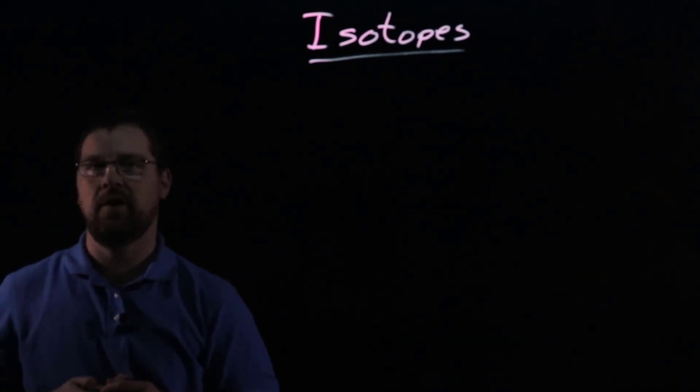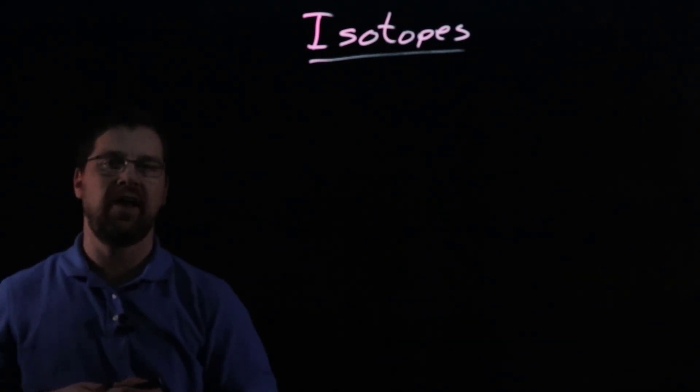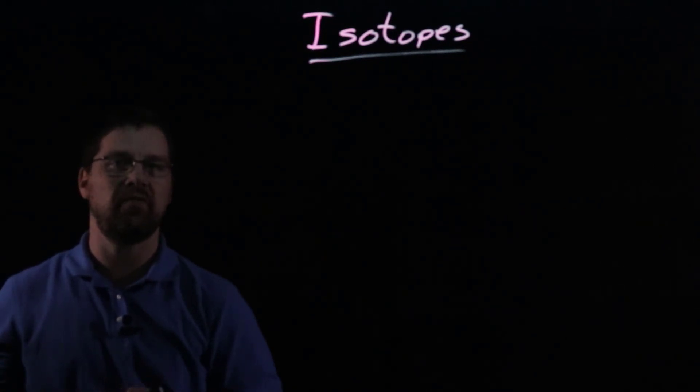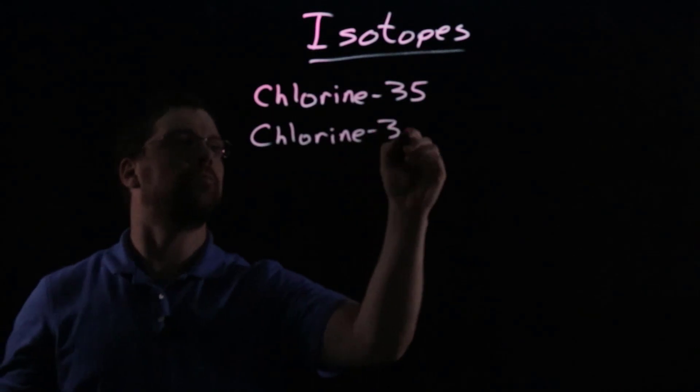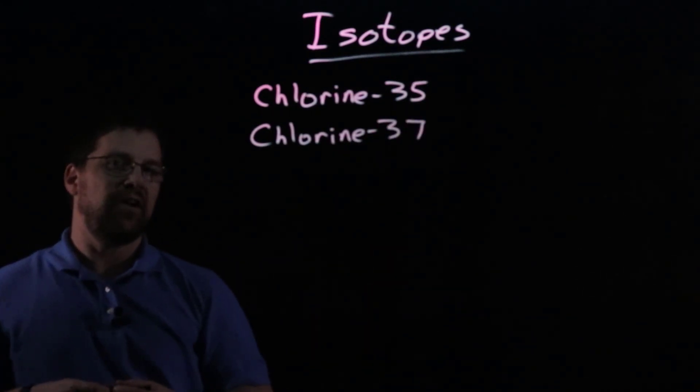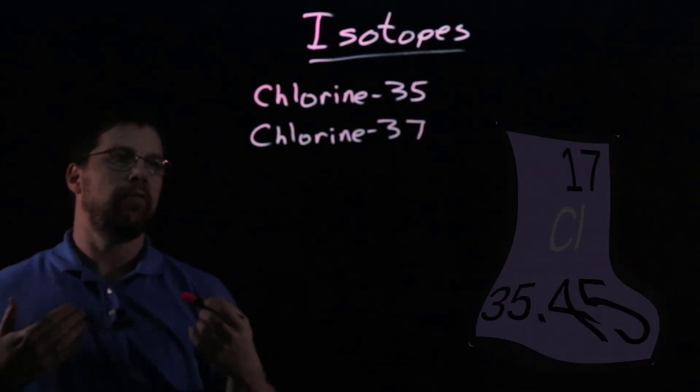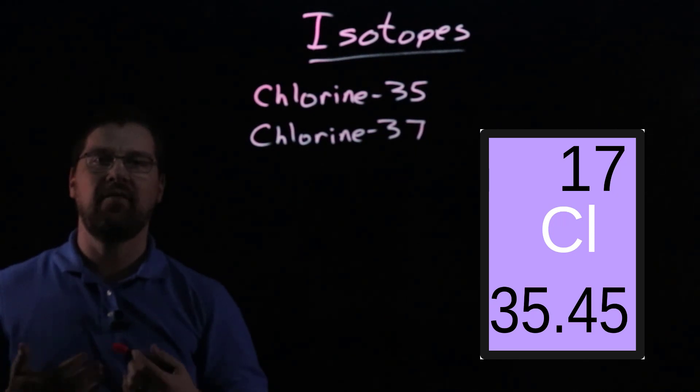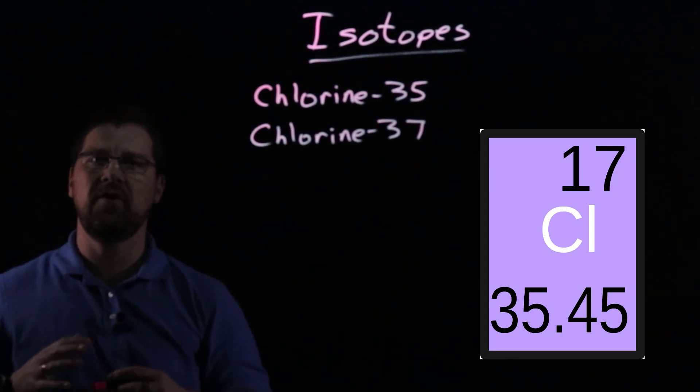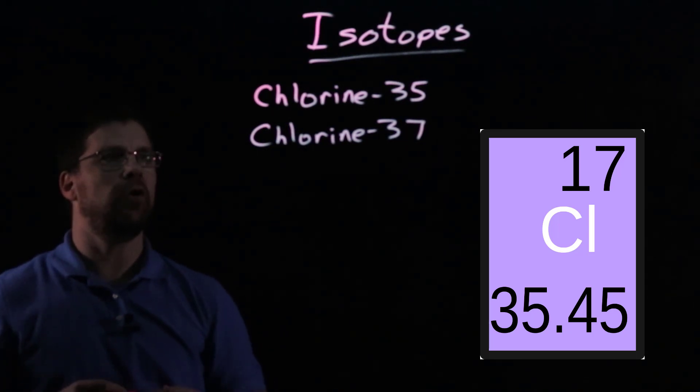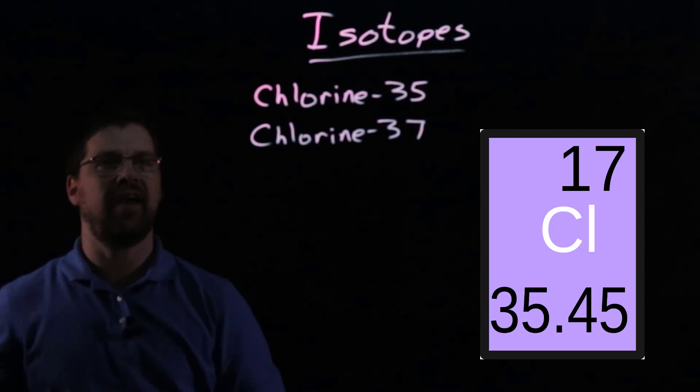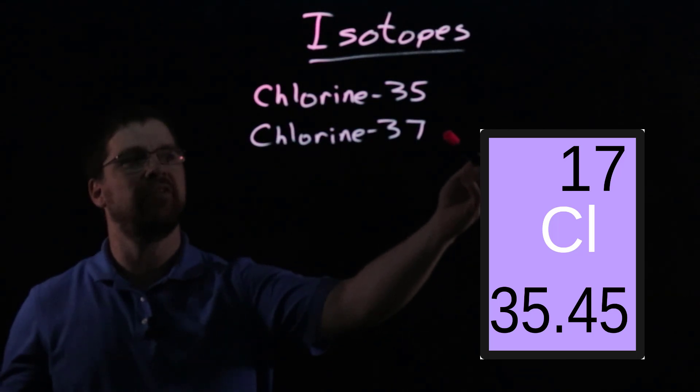So let's take, for instance, the element chlorine. The element chlorine has two main isotopes, chlorine-35 and chlorine-37. Now when we look at the periodic table, we see for the element chlorine that it has an average atomic mass of 35.45. But when we look at the two isotopes that make up chlorine, we see that they have a mass of 35 and 37.